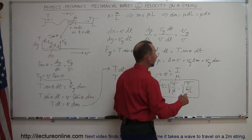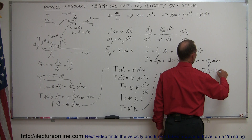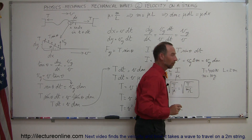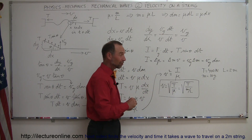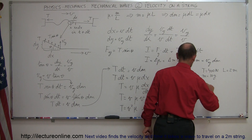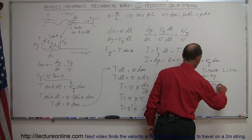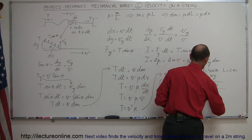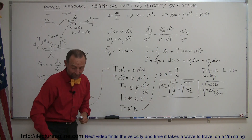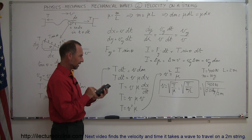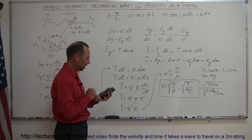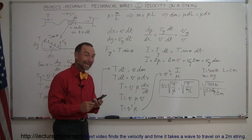For a quick example: suppose the tension is 400 newtons, the string length is 2 meters, and the mass of the string is 10 grams. How fast will the wave move? We plug in: v = √(400 N ÷ (0.01 kg / 2 m)). That gives √(400 ÷ 0.005) = √(80000), which works out to approximately 283 meters per second.